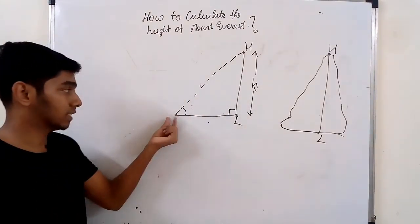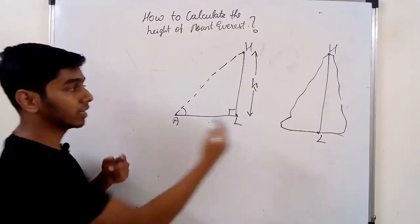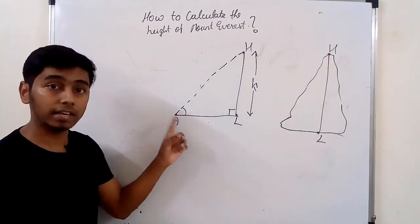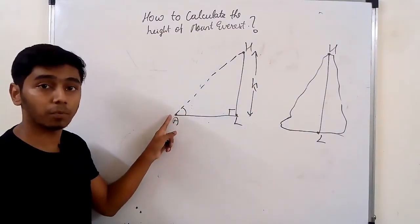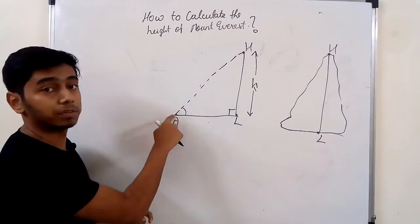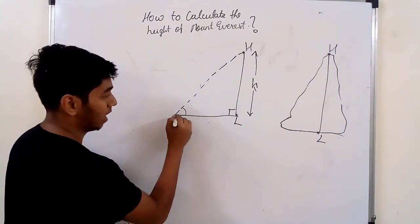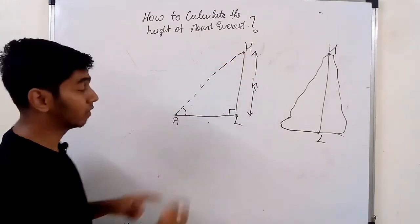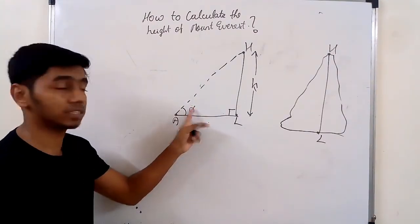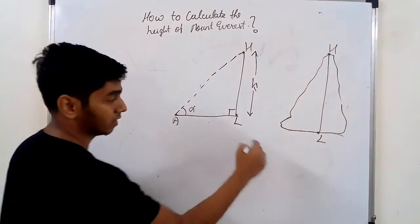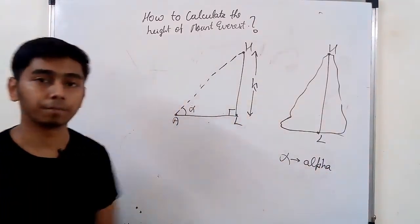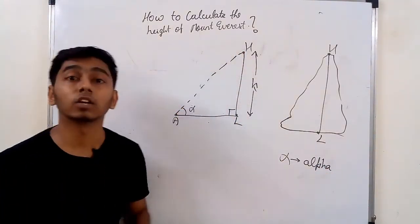Let's take a point. There is Mount Everest on one side, and a person is standing over here, away from Mount Everest. This is the height of Mount Everest. The person is looking at the top of Mount Everest with an angle alpha. This is a special Greek letter called alpha. So at an angle alpha, they are looking at the topmost point.